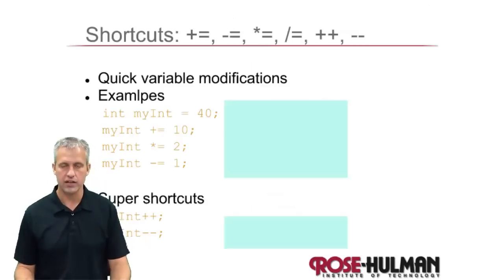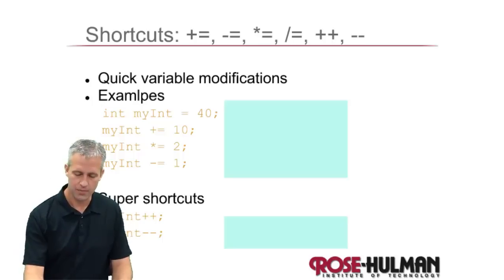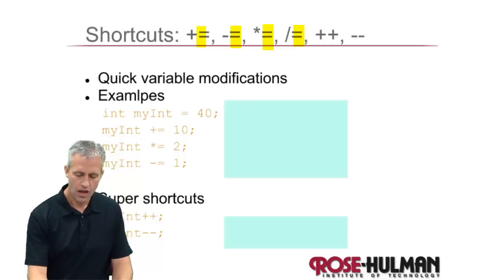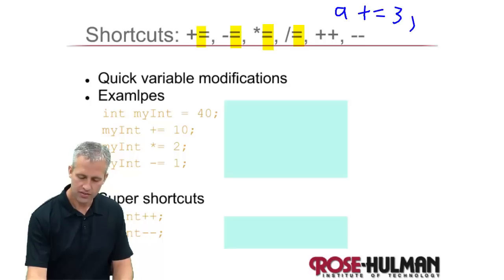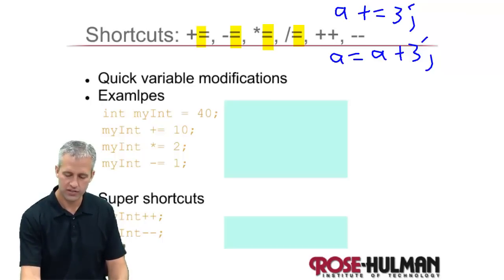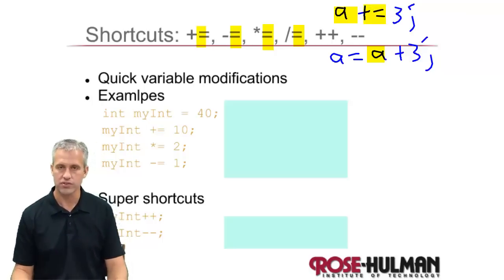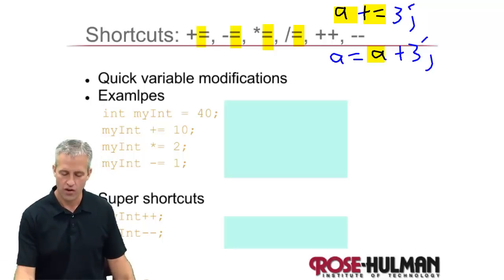Let's start off with a couple that are easy — the shortcut operators. Shortcut operators are for assignment, so it's always some symbol and then the equal symbol. They are shorthand for people that are lazy. So if you say a plus equals three, that is the exact same as saying a is equal to a plus three. It is simply shorthand, so instead of writing the variable twice you write it just once and say plus equals. There's nothing special about it — it just saves you a couple of characters.